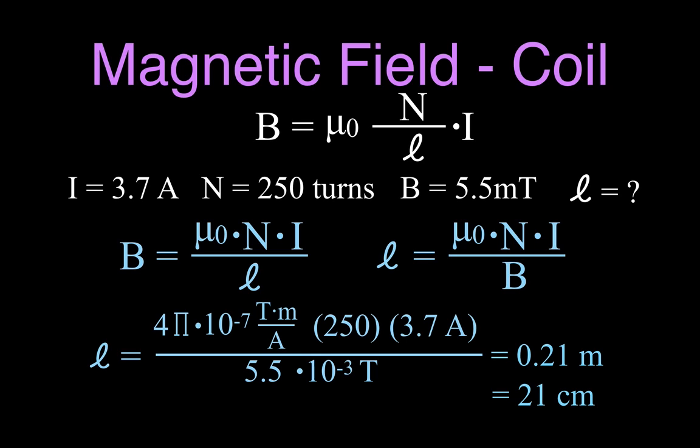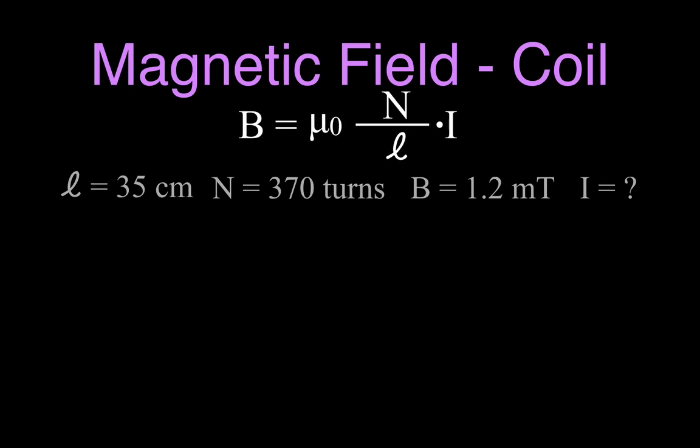That's how we can calculate the length, and we can do something similar when we want to now calculate the current. We have a length of 35 centimeters, 370 turns, magnetic field strength 1.2 milliteslas this time, and then we want to know the current. We're going to take the same equation. I'm going to do the same thing. I wrote the μ₀ and the N and the I on the top, the ℓ on the bottom.